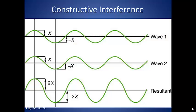Constructive interference happens when the crests of two waves align. Take wave 1 and wave 2. These are two identical waves that happen to arrive so that the crests and the troughs line up. The resultant wave at the bottom has a crest with an amplitude equal to the sum of the crest amplitude of wave 1 and the crest amplitude of wave 2.